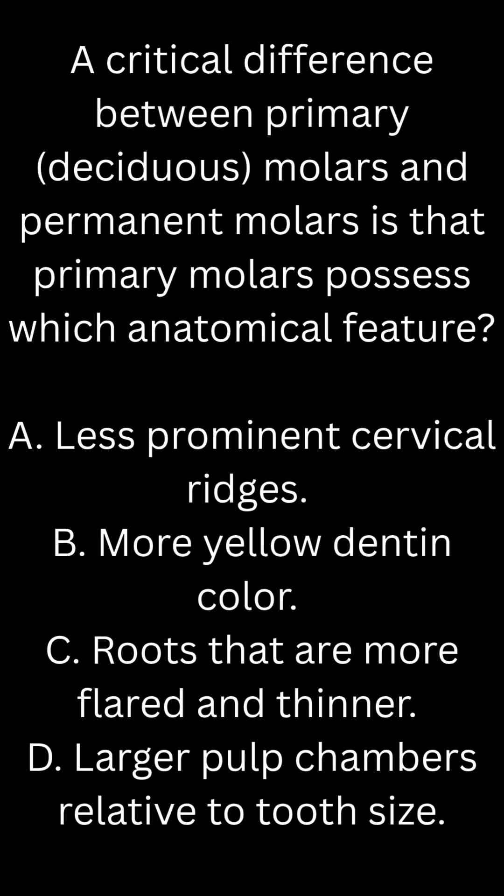A critical difference between primary deciduous molars and permanent molars is that primary molars possess which anatomical feature? A. Less prominent cervical ridges. B. More yellow dentin colour. C. Roots that are more flared and thinner. D. Larger pulp chambers relative to tooth size.